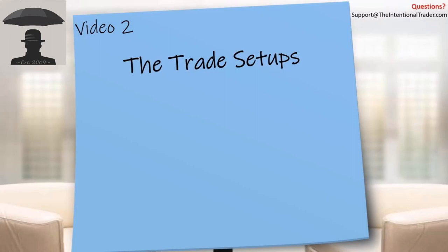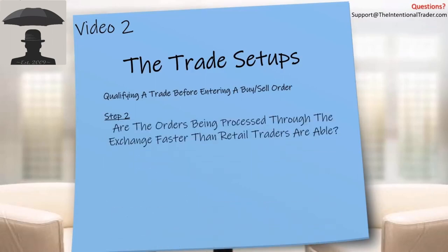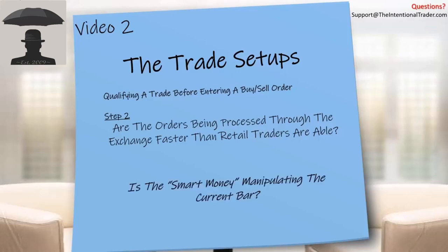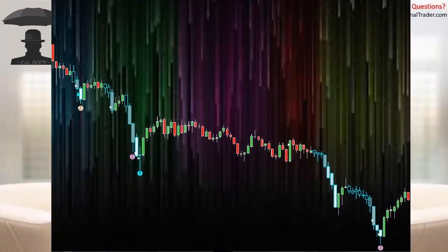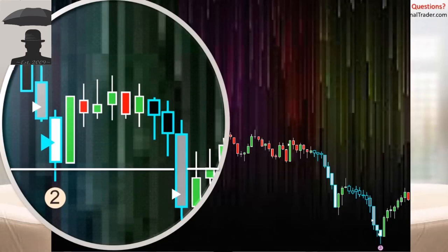The speed tick setup requires that we have a major support or resistance behind our trade as a safety net in case the trade tries to go against us. We traded this setup for many years prior to enhancing it. What I want to know is: is smart money currently manipulating the current bar? That's what we're measuring. We want to look inside the exchange to see how fast orders are being processed. This is our speed tick setup — let's zoom in. It requires major support and resistance as our safety net.